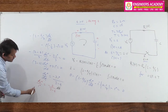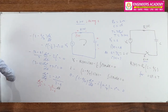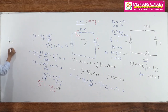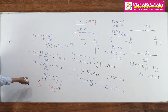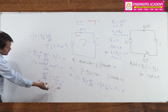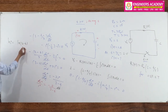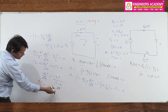Integrating both sides: ∫dI/I = ∫-2/(3-t)dt. The left side gives ln(I). For the right side, integrating -2/(3-t) with respect to t gives 2·ln(3-t). So: ln(I) = 2·ln(3-t) + constant, which means I(t) = C·(3-t)².